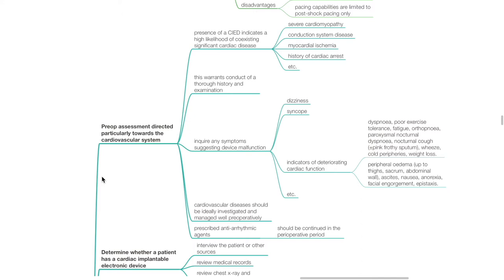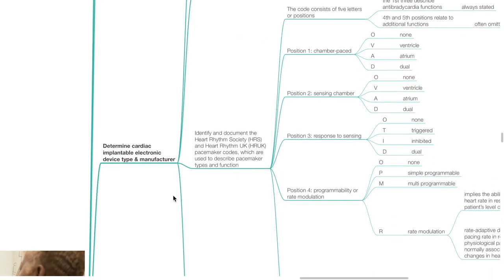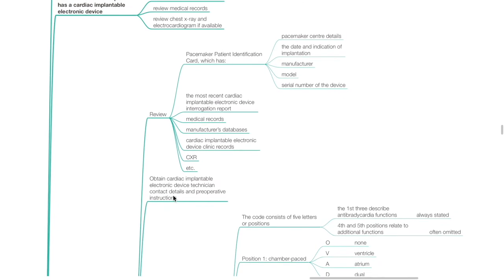Cardiovascular diseases should ideally be investigated and managed well preoperatively. Prescribed antiarrhythmic agents should be continued in the perioperative period. Determine whether a patient has a CIED by interviewing the patient or other sources, reviewing medical records, chest X-rays, and electrocardiograms. Determine the CIED type and manufacturer. Review the pacemaker patient identification card, which has pacemaker center details, the date and indication of implantation, manufacturer, model, and serial number. The most recent CIED interrogation report, medical records, manufacturer databases, and cardiac implantable electronic device clinic records can be reviewed.